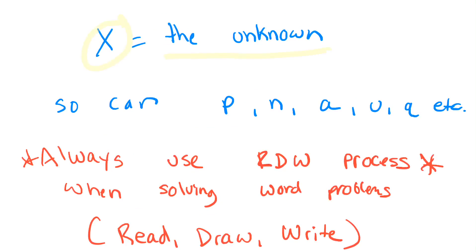So X equals the unknown. Sometimes you'll see that. So can P, N, A, U, Q, Z, H, I, J, K, L, M, N, O, P. All of that can represent the unknown. Here's a tip. Always use the RDW process when solving word problems. That means read the problem. Draw something to help you solve that problem. And then make sure you're writing your answer. You're also writing in a complete sentence when you have your answer. Because we don't just walk out the door when we're finished and just write an answer. You have to tell me in a math sentence.